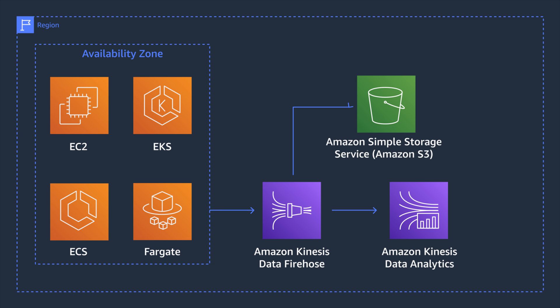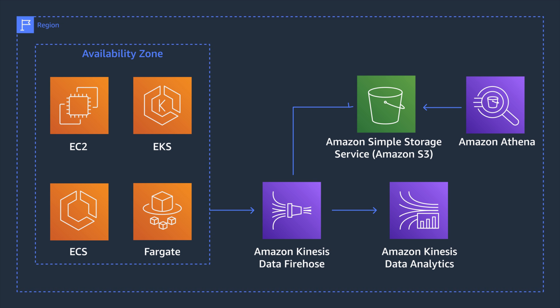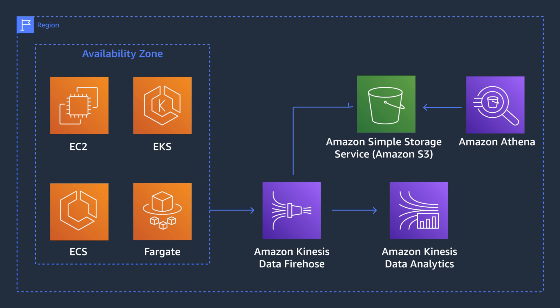We use S3 as one destination for long-term storage and the ability to use Amazon Athena to run ad hoc analyses on historical data. We also use Kinesis Data Analytics as a second destination to continuously run SQL statements against the streaming data and aggregate the data every minute. Tumbling windows help you aggregate your data over fixed, open, and closed intervals.